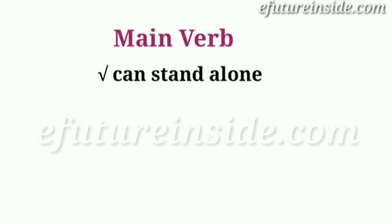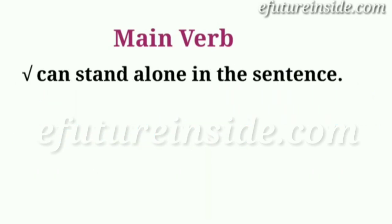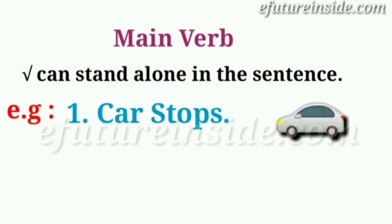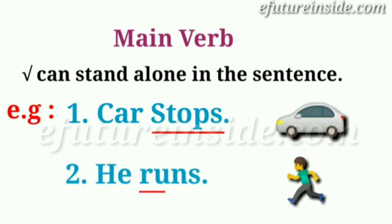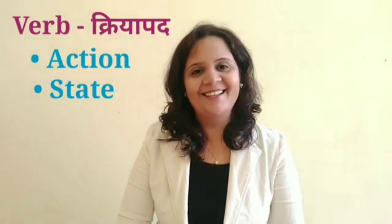Main verb can stand alone in the sentence — meaning, with just this verb we understand the complete meaning of the sentence. For example: 'Car stops' — here 'car' is the subject and the action is 'stop', meaning the car came to a halt, so 'stop' is the main verb. Another example: 'He runs' — here 'he' is the subject and 'run' is the action, so 'run' is the main verb or action verb.